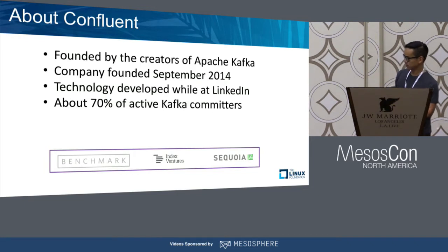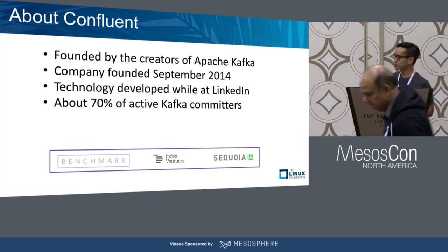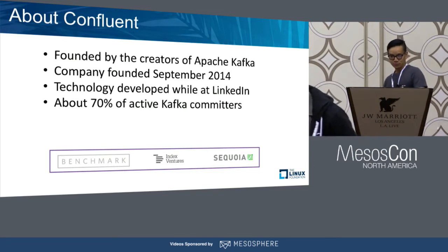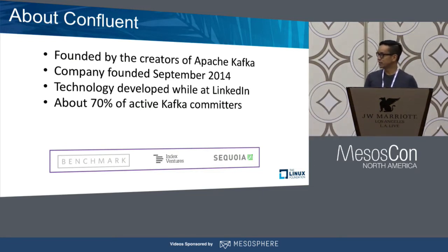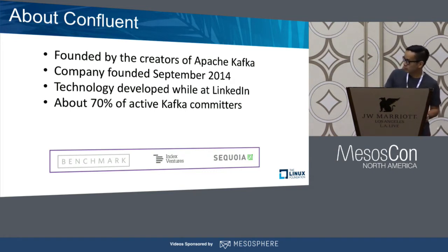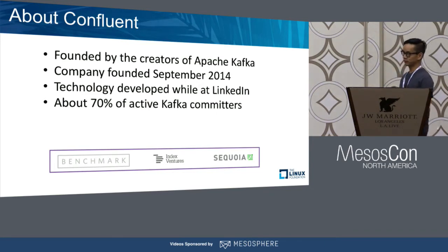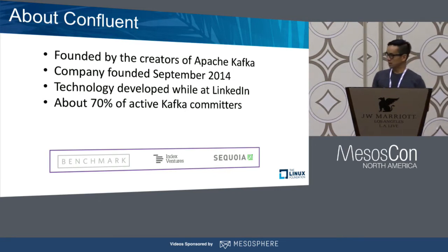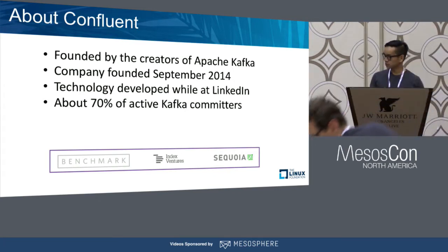About the company - just one slide. The company is exactly three years old, founded by the creators of Kafka. There are three founders: Jay, Neha, and June - the original inventors of Kafka who came out as LinkedIn engineers. Currently we have about 140-ish people, with a good portion being engineers, and we think we are the largest contributor to the Apache Kafka project.